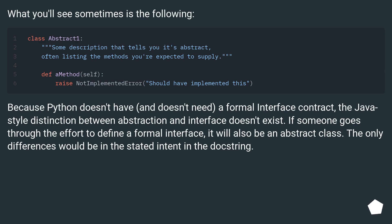Because Python doesn't have, and doesn't need, a formal interface contract, the Java-style distinction between Abstraction and Interface doesn't exist. If someone goes through the effort to define a formal interface, it will also be an Abstract Class. The only differences would be in the stated intent in the docstring.